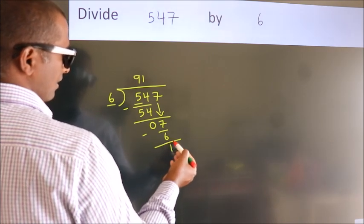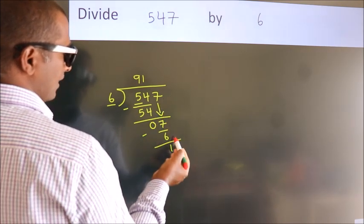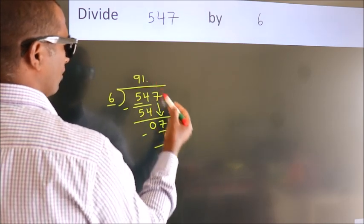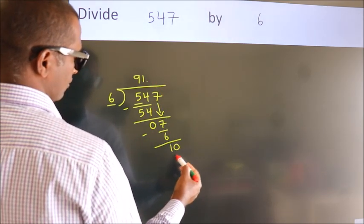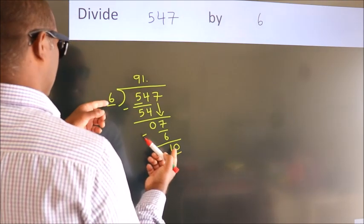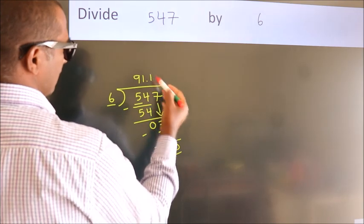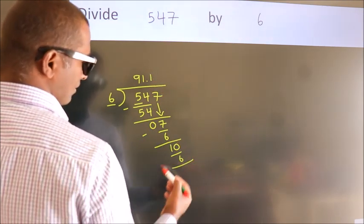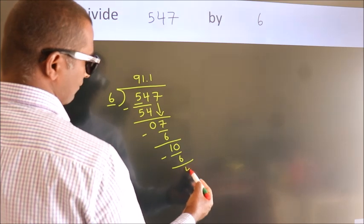After this, no more numbers to bring down. So what we do is put a dot and take 0. So, 10. A number close to 10 in the 6 table is 6 ones, 6. Now we subtract and get 4.